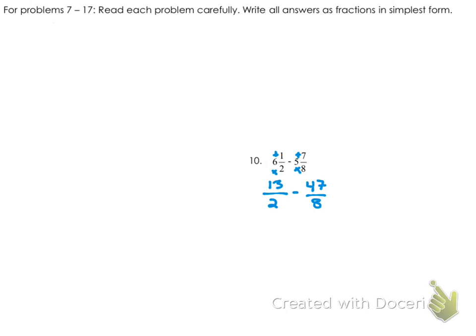Now, we need a common denominator. Right now I have 13 over 2 minus 47 over 8. Our easiest option would just be to change 13 over 2 so it has an 8 in the denominator. So I'm going to multiply that by 4 over 4. Whatever I do to the bottom, I have to do to the top, which is what a lot of you forget to do. So make sure you're multiplying the top by 4 as well as the bottom.